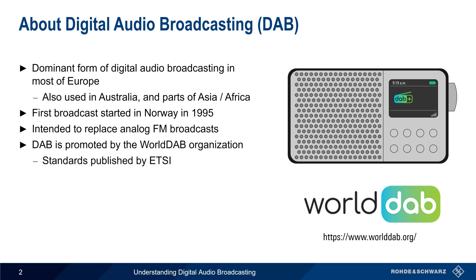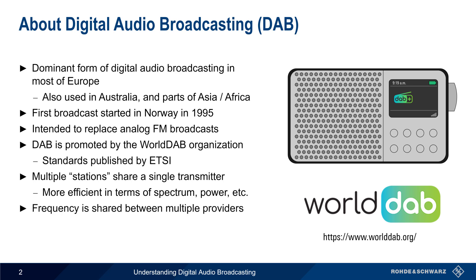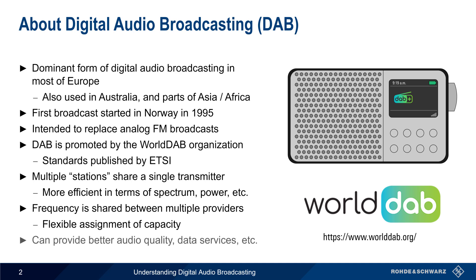One of the greatest advantages of DAB is that it allows multiple stations to share a single transmitter, making DAB more efficient in terms of spectrum use and transmit power. Not only is a single transmitter frequency shared between multiple providers, but the total capacity of the transmitter can be flexibly and dynamically assigned. Other main advantages of DAB include better audio quality and the ability to provide data services.